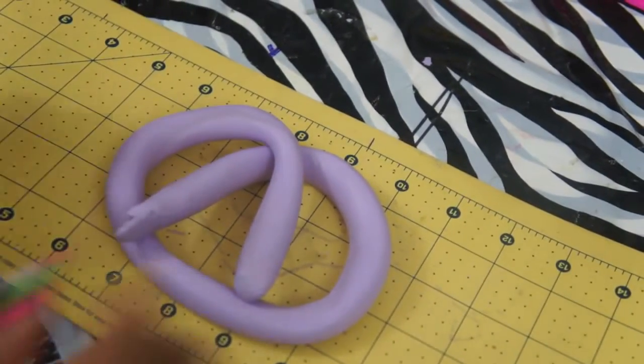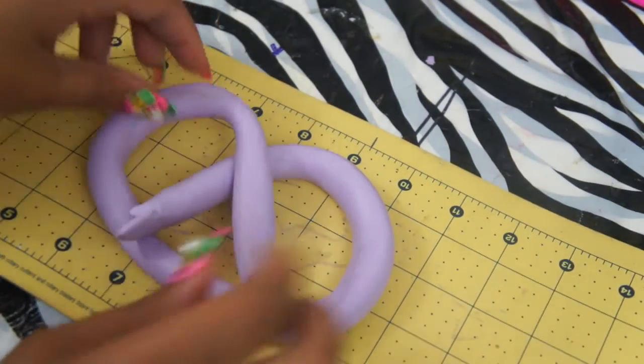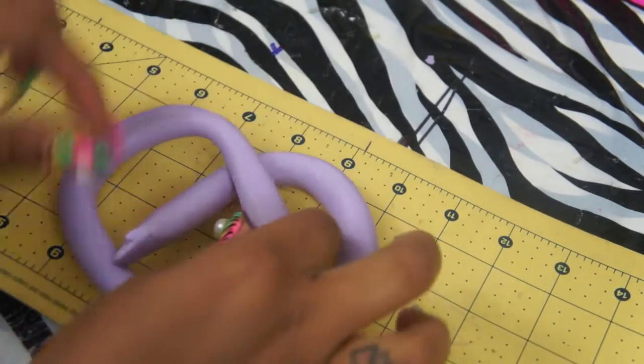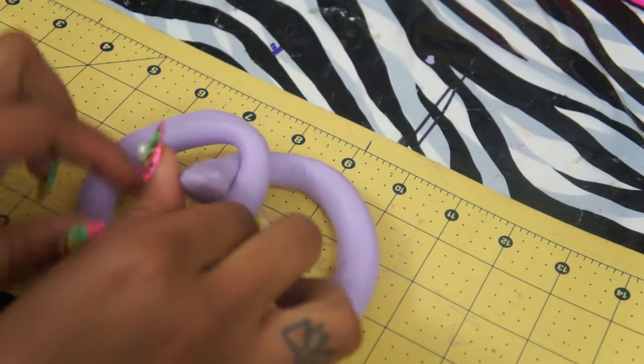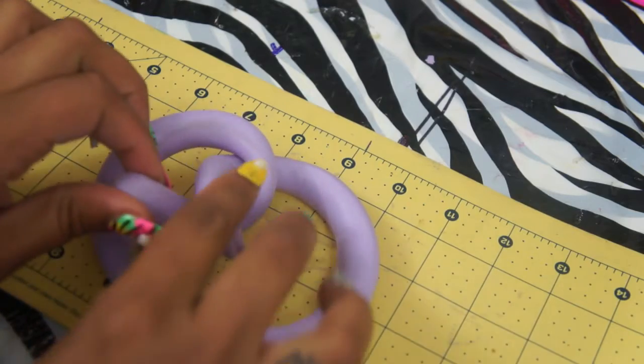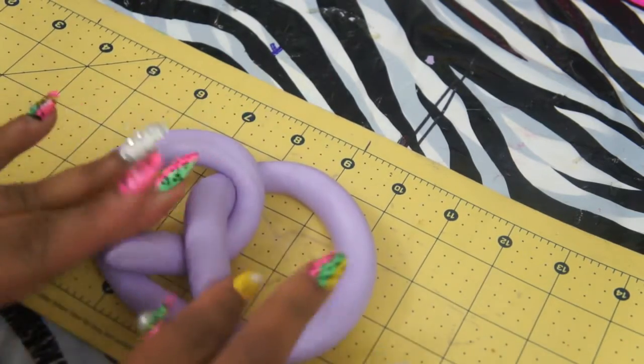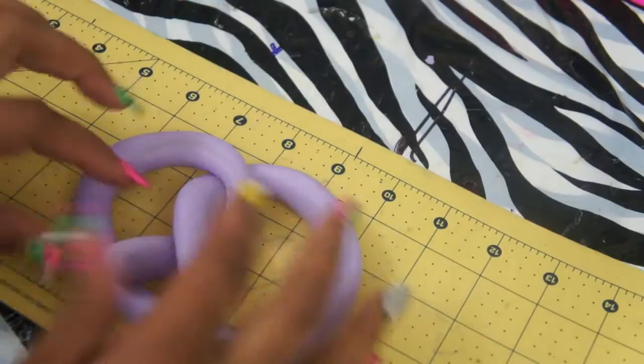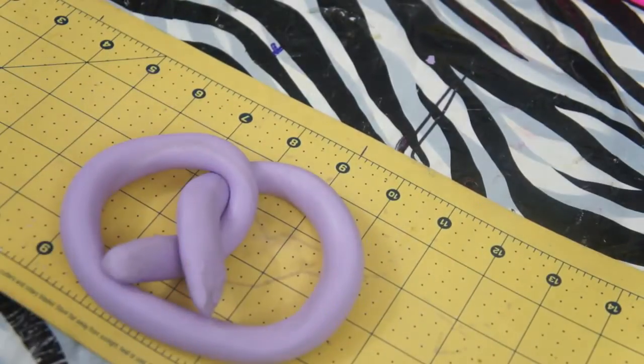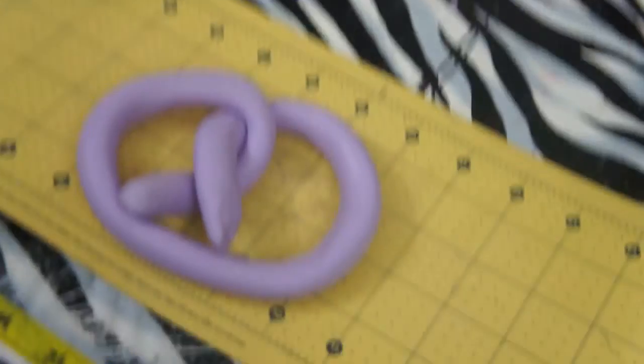Okay, so just fix up your clay. Then once you get the desired shape and size that you want, what you want to do is cross this like that. As you can see, it looks like a pretzel now.